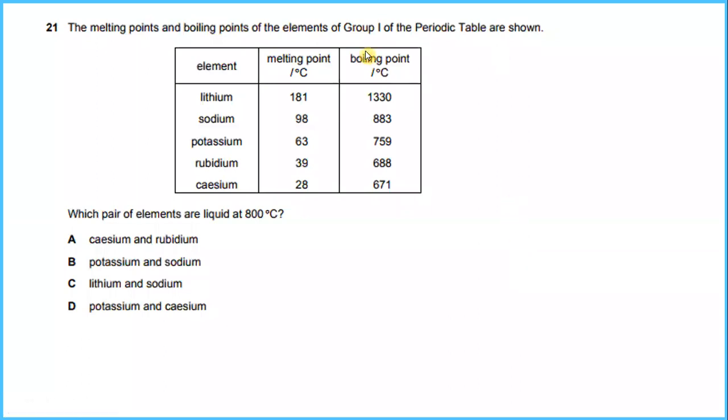Question number 22. The melting points and boiling points of the elements of Group 1 of the periodic table are shown. Which pair of elements are liquid at 800 degrees Celsius? So if you look at the table here, you can see that lithium and sodium.